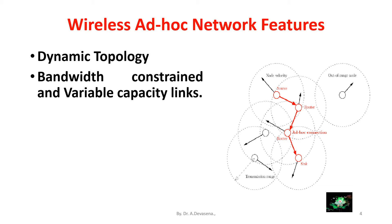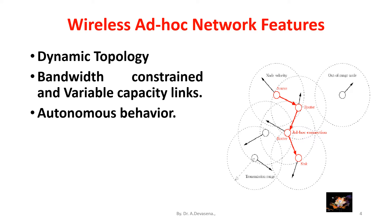The third feature is that each node in an ad hoc network has autonomous behavior. Each node can act as the host and router, which shows its autonomous behavior. All nodes have identical features with similar responsibilities and capabilities, and hence it forms a completely symmetric environment.